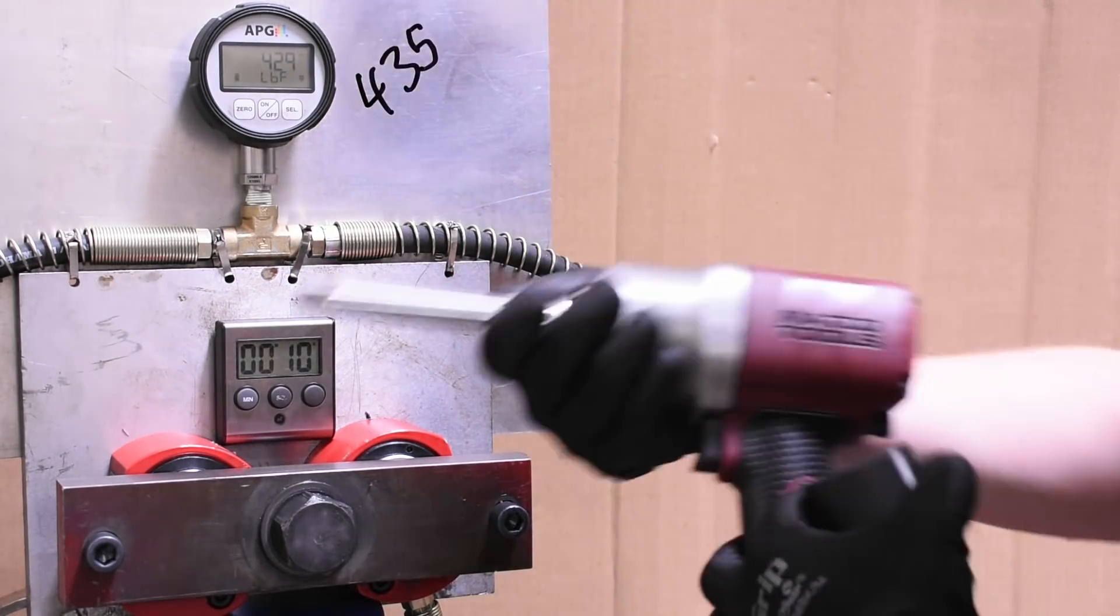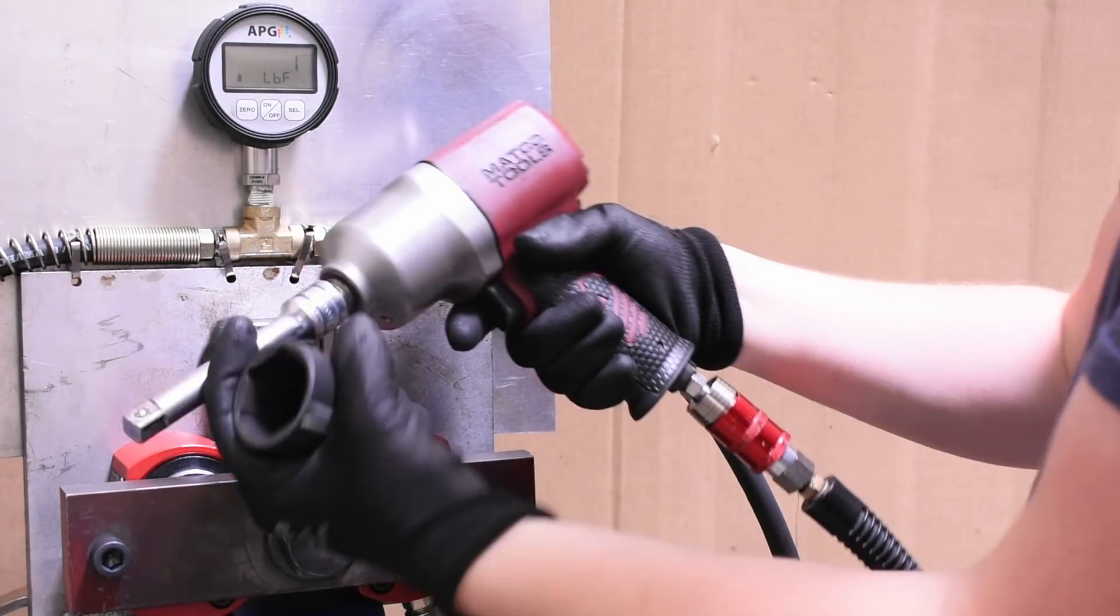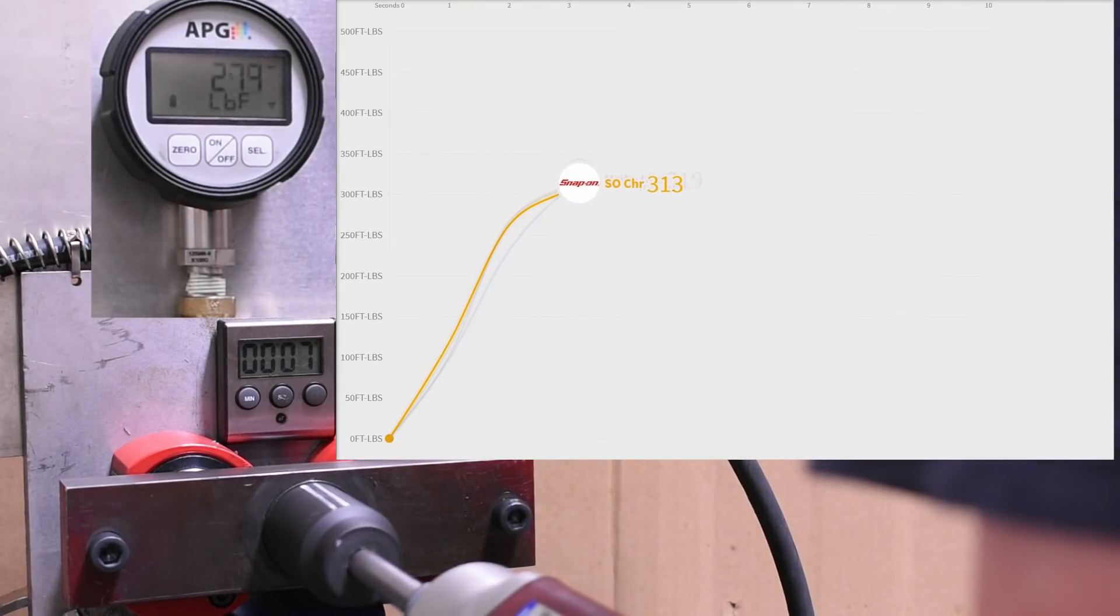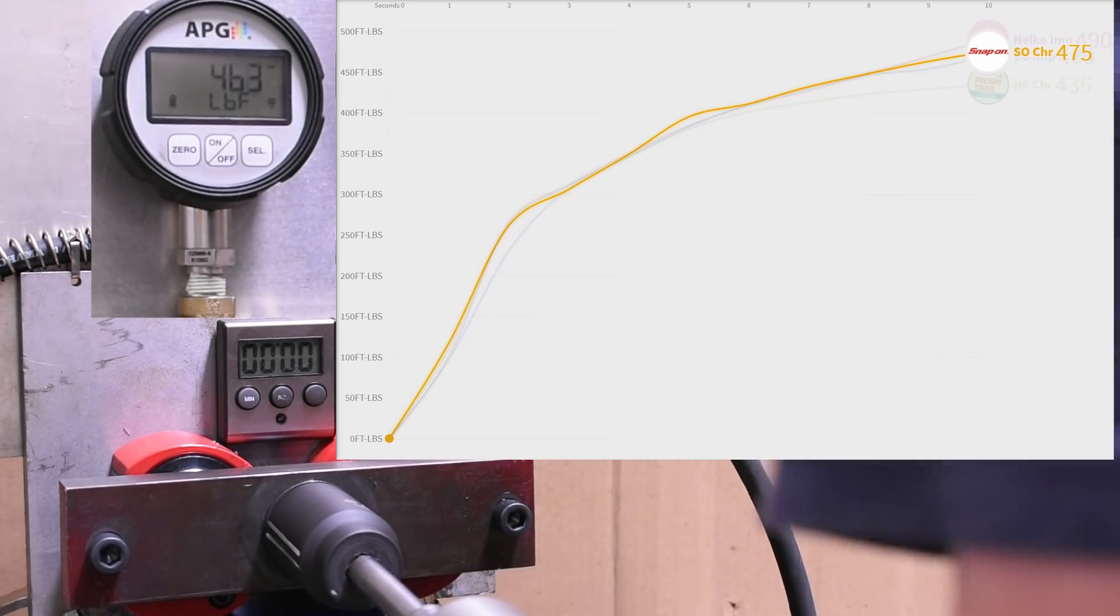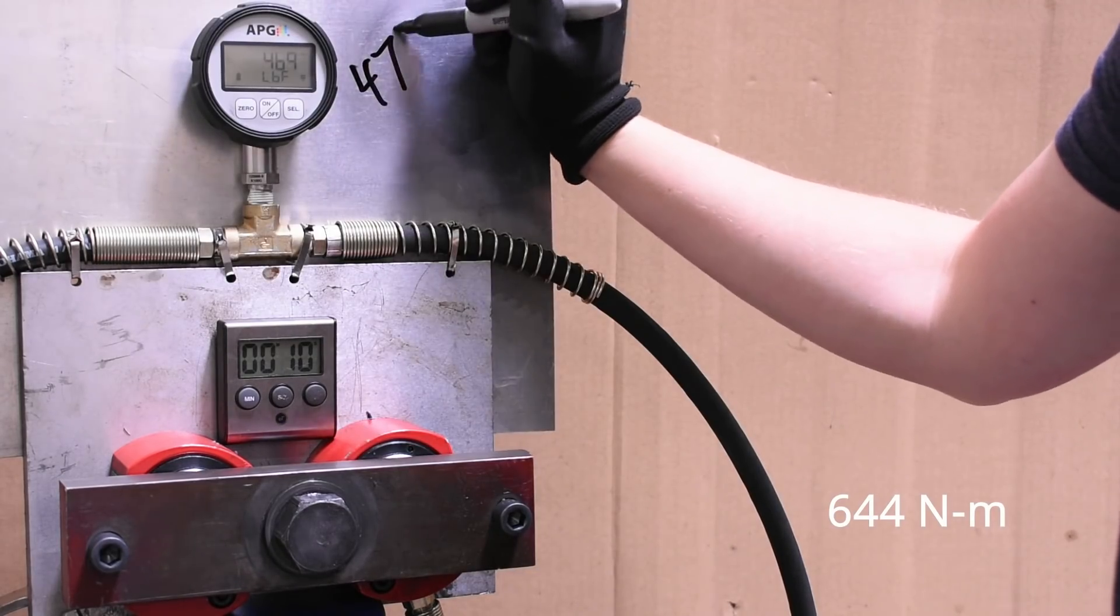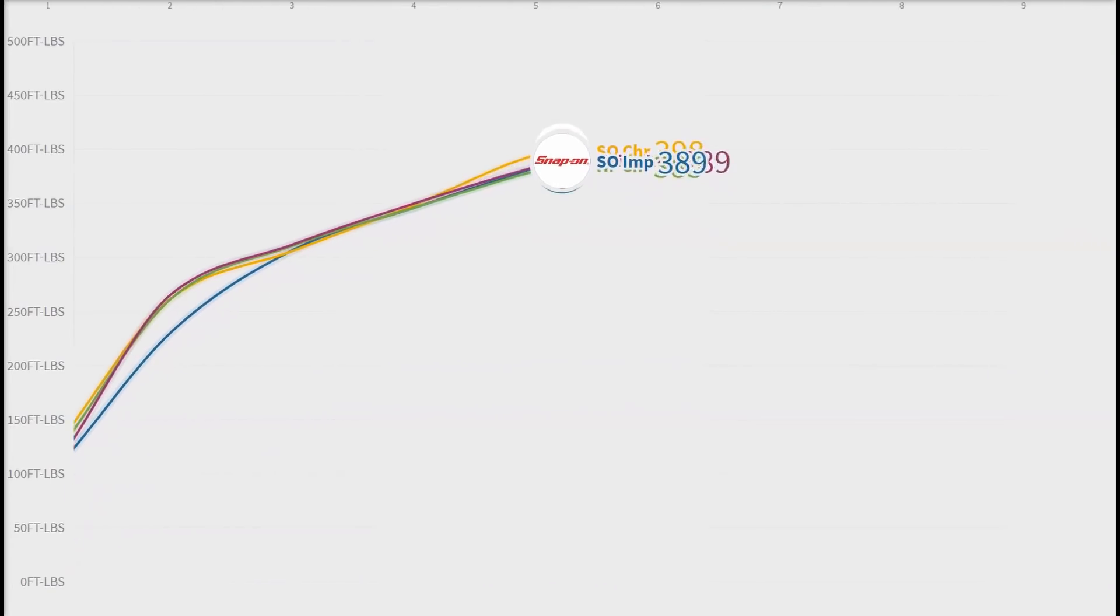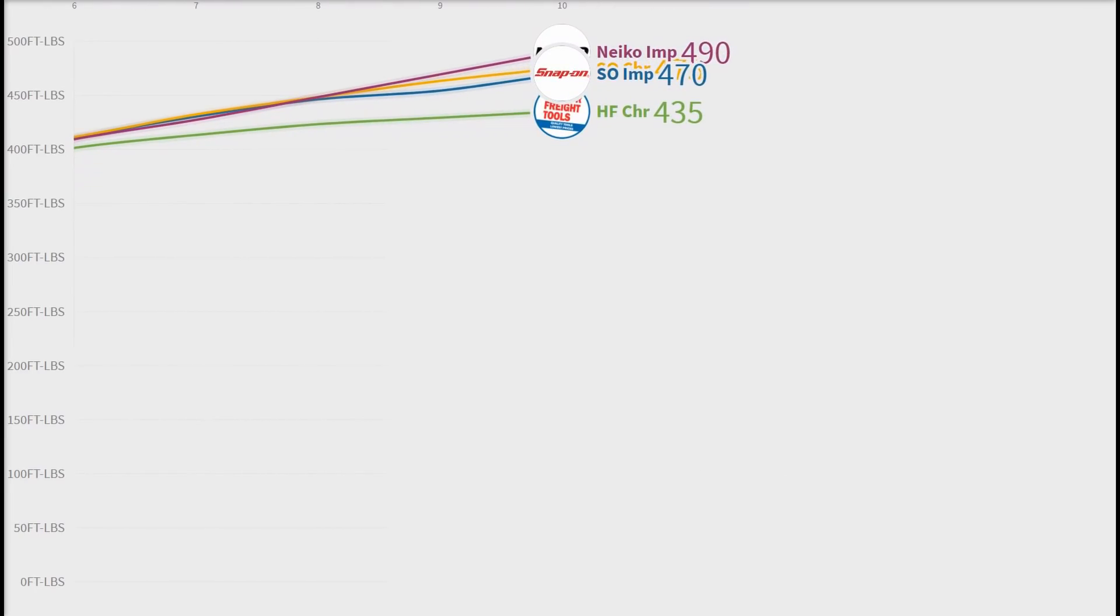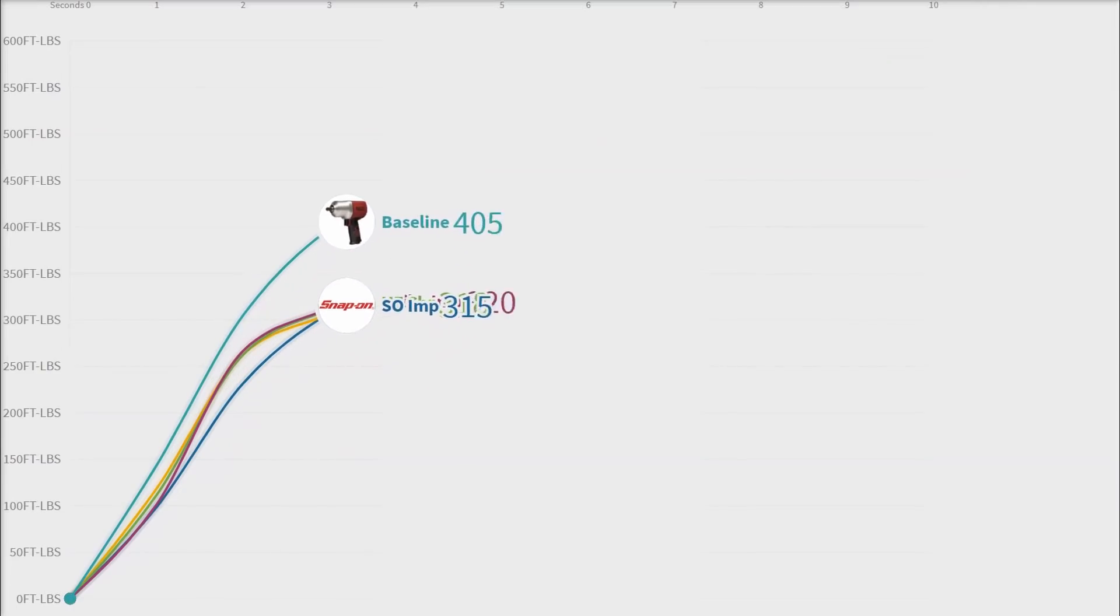But maybe that's from it being chrome versus impact grade. Let's find out by putting the Snap-on on there. We're going to highlight this run on the graph for you guys, just so it can stand out and be easier to see. So 475, essentially the same power as the other Snap-on extension. It's interesting that the two budget extensions were made from the same material, CR-V, and close hardness actually, but had such a wide difference in power transfer. Yet the Snap-on tools, also assuming the same material here, and a very much difference in hardness, had a very close relationship of power.